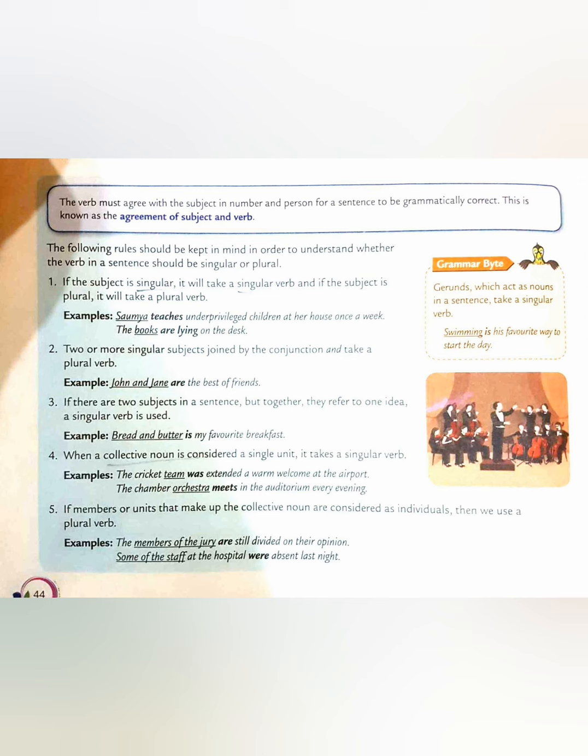So here in this chapter, we are going to learn the conditions or the rules which is being justified by subject and verb. They have some concord between them. The verb must agree with the subject in number and person for a sentence to be grammatically correct. This is known as the agreement of subject and verb.